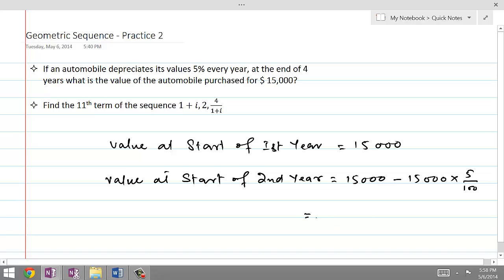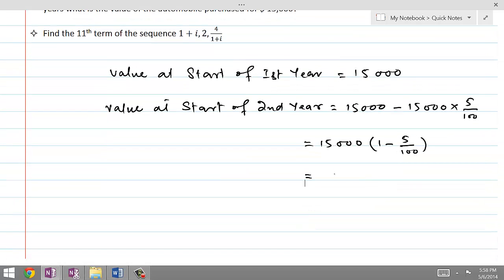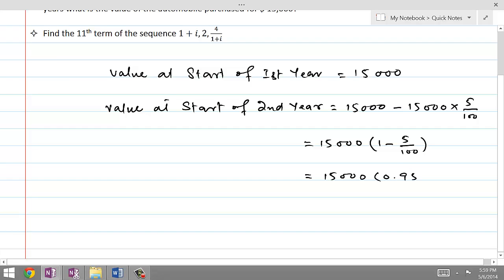So this is equal to, if we take $15,000 common, what is inside is 1 minus 5 over 100. So this is equal to 15,000 times 0.95.